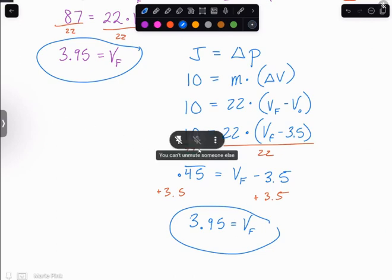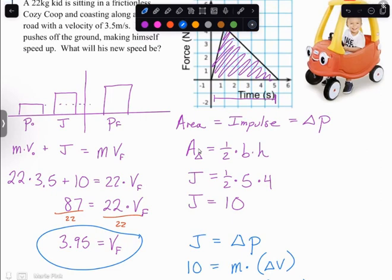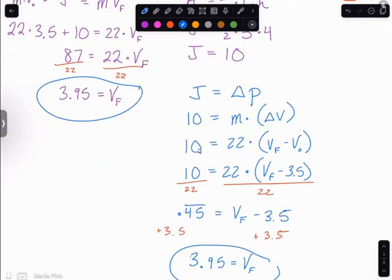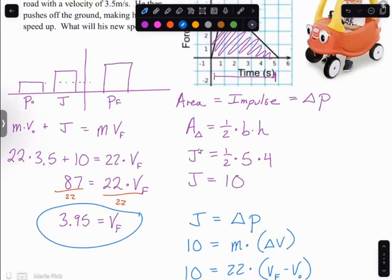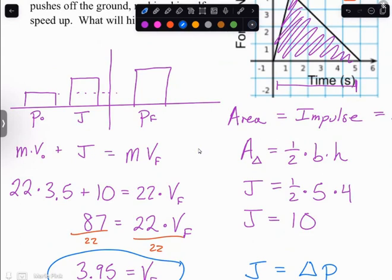In my experience, if you do it this way where you do the bar charts, you will not mess it up. If you do it with just the equation, a lot of students mess it up. The other thing to take into account as well is if you are trying to slow down, then your impulse will be negative. So your impulse is positive if you're trying to speed up. It's negative if you're trying to slow down.